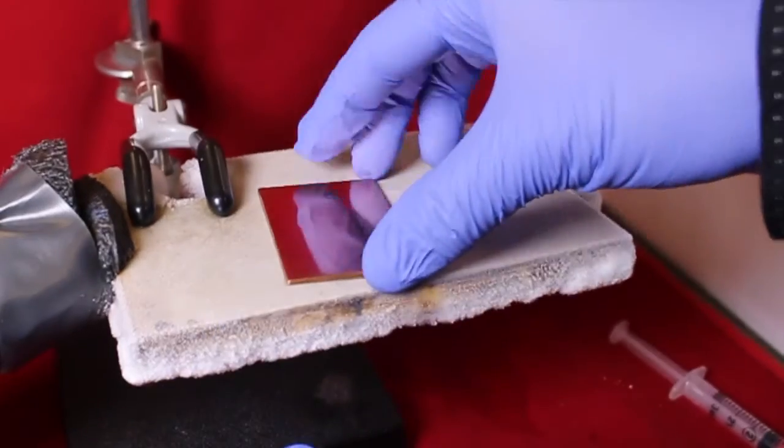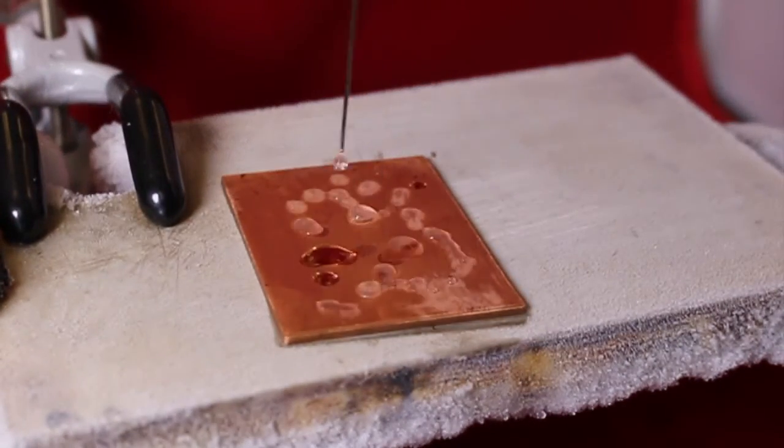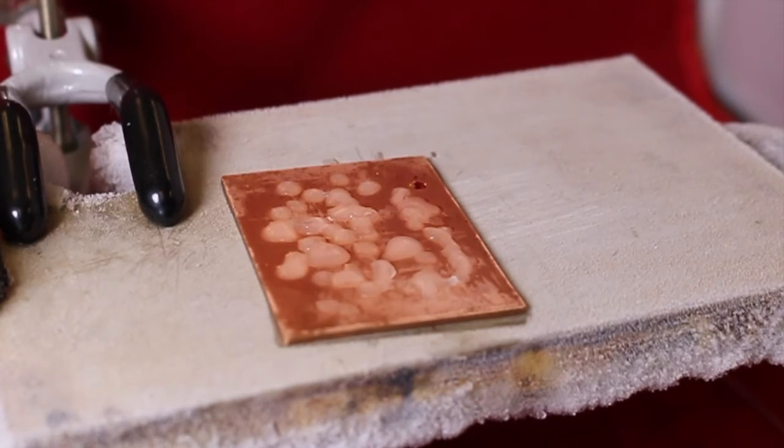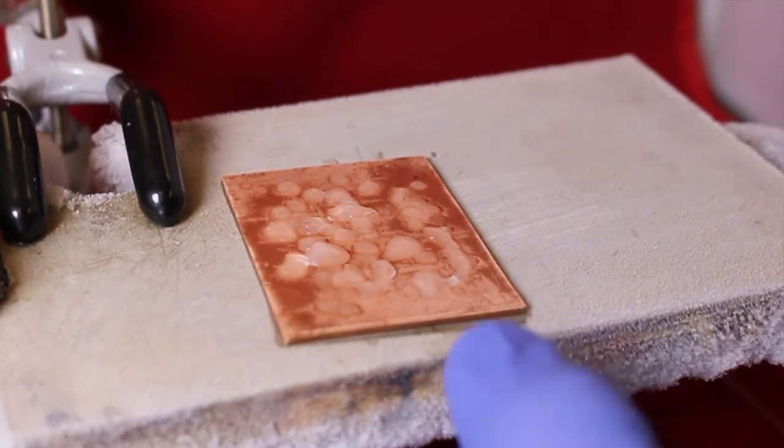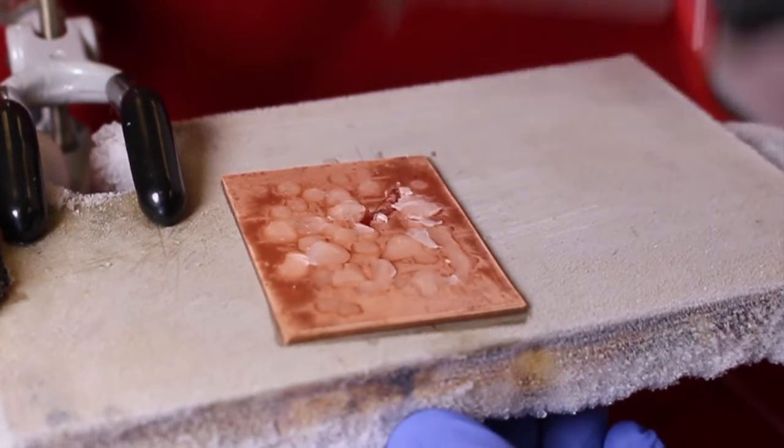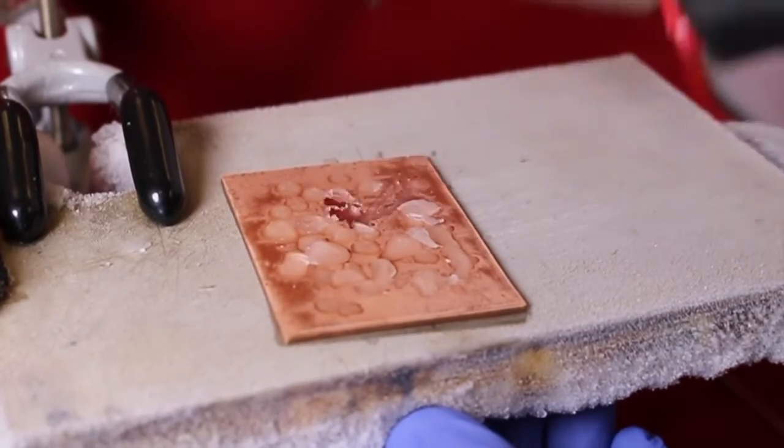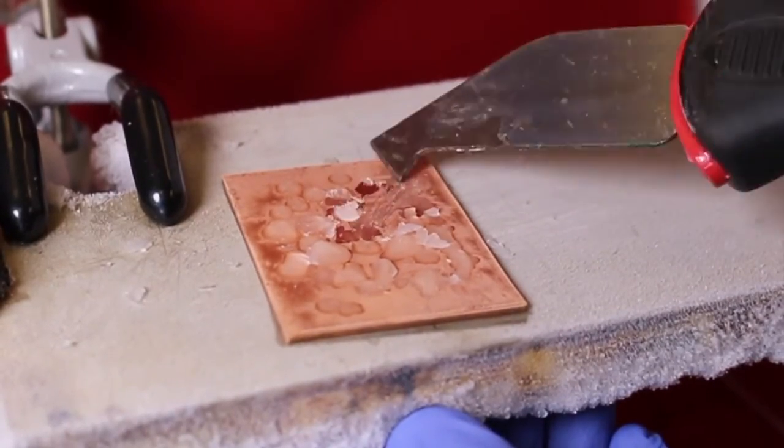Consider a copper plate that is placed on a cold surface. If we allow water droplets to freeze on the copper, the ice that forms proves to be very difficult to remove. Even after forcefully scraping at the copper plate for several minutes, we are unable to completely remove all the ice that forms.